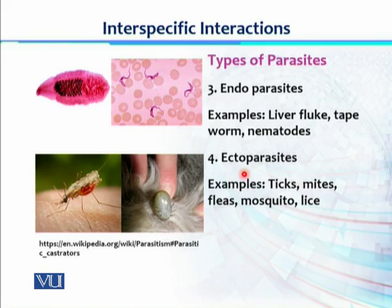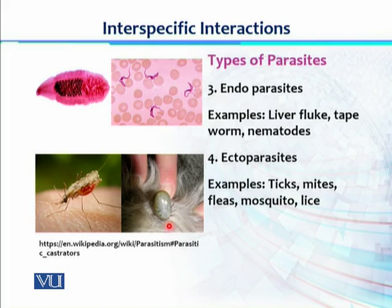Ectoparasites are those types of parasites which are present on the body surface of their host. These are mostly fluid feeders — they feed on the blood or secretions of their host. Common examples include mosquitoes, fleas, ticks, mites, and lice, and they have a variety of hosts including humans.